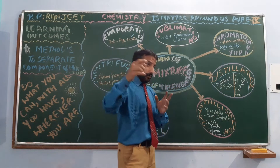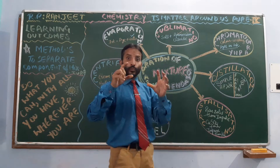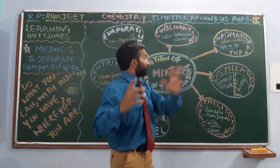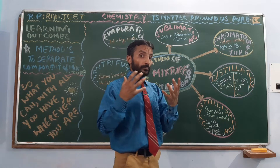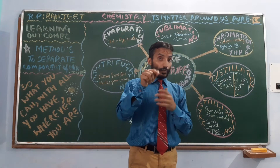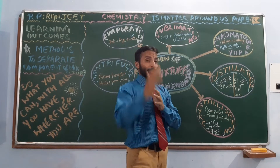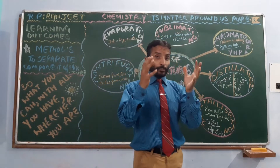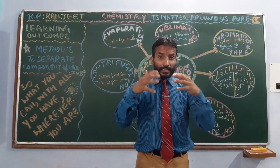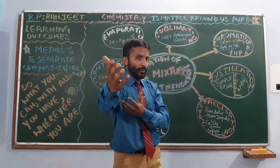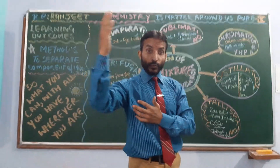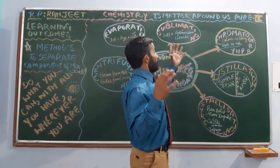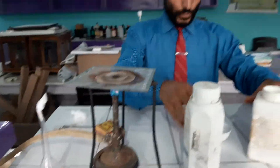You have seen how we separated two immiscible liquids. Next is how to separate salt from ammonium chloride. Here we will use the process of sublimation. You know that ammonium chloride, naphthalene, and camphor undergo sublimation. Sublimation is the conversion of a solid directly into the gaseous state. We will apply this method here. This is the setup for sublimation.